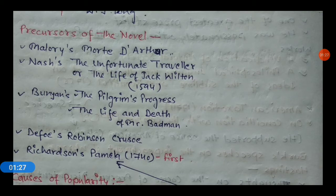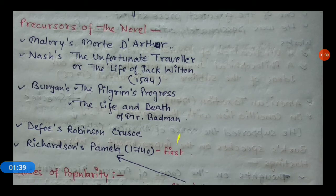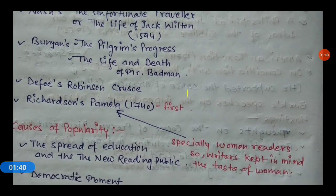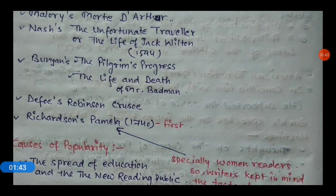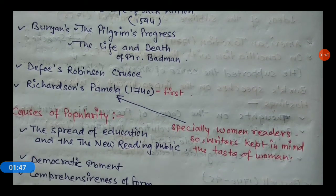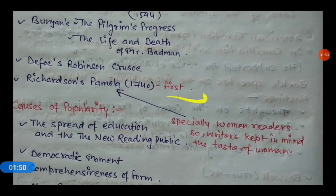Other precursors include Bunyan's The Pilgrim's Progress, and The Life and Death of Mr. Badman. Then there is Defoe's Robinson Crusoe and Richardson's Pamela in 1740, which is called the first novel in English literature — especially written keeping women readers in mind.